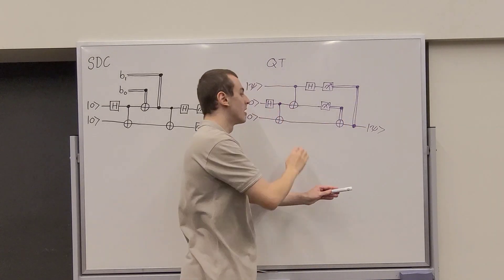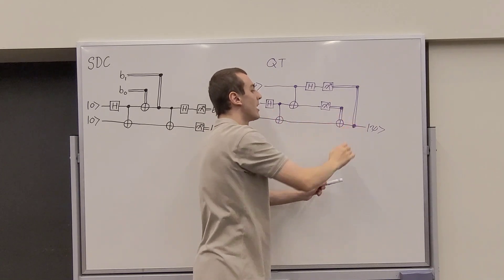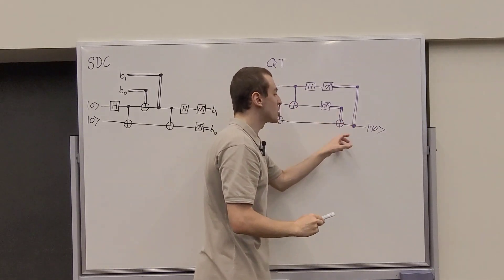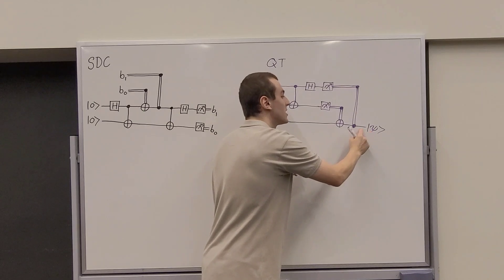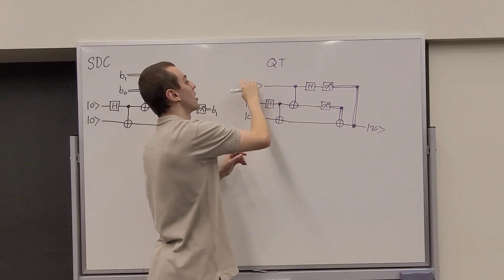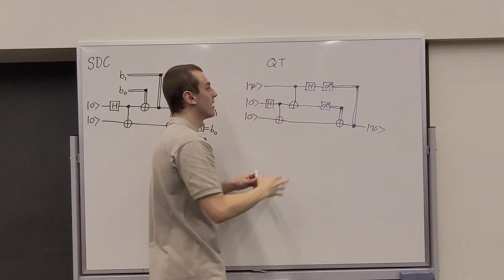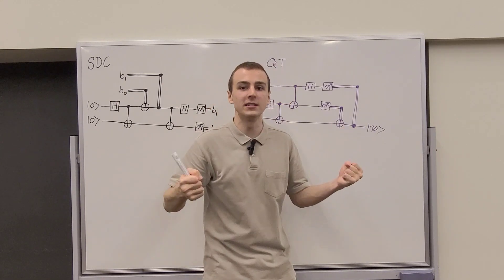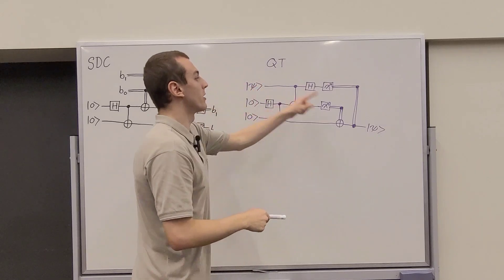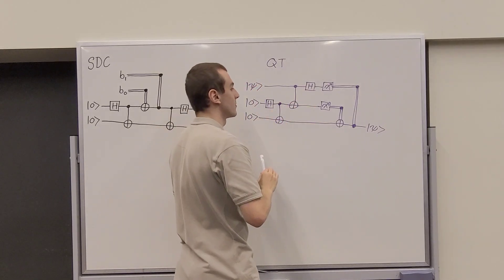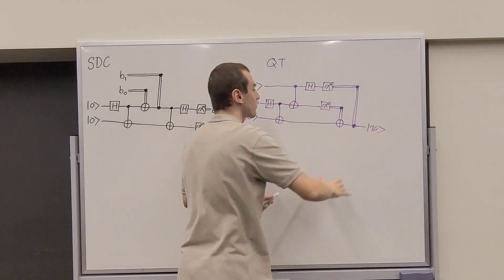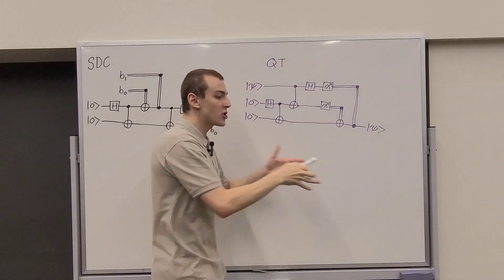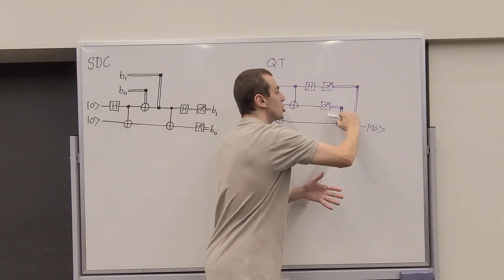Bob applies classically controlled bit flips and phase flips to his qubit, and these corrections ensure that the state he ends up with is the same state Alice originally had. In quantum teleportation, the original state gets destroyed — a consequence of the no-cloning theorem. You cannot make exact copies of qubit states, but you can teleport them using entanglement.